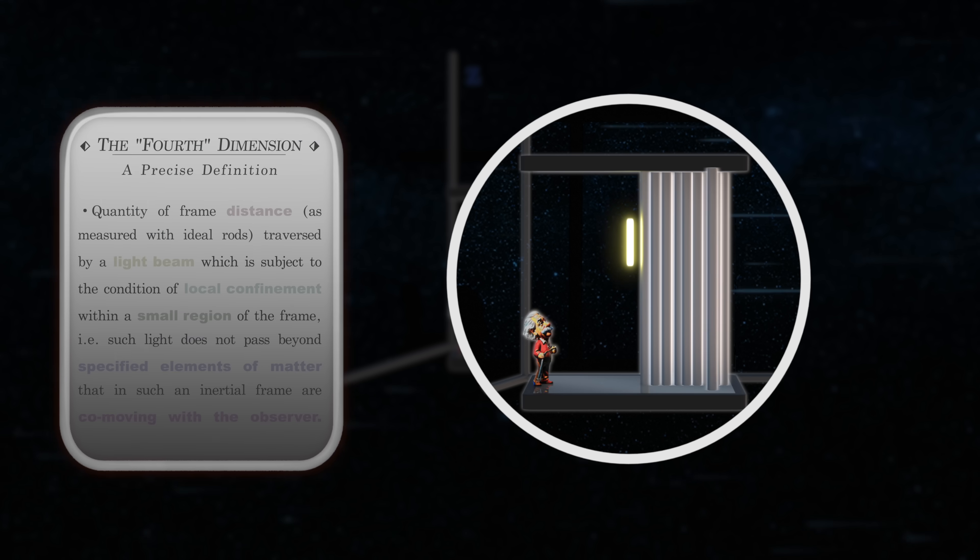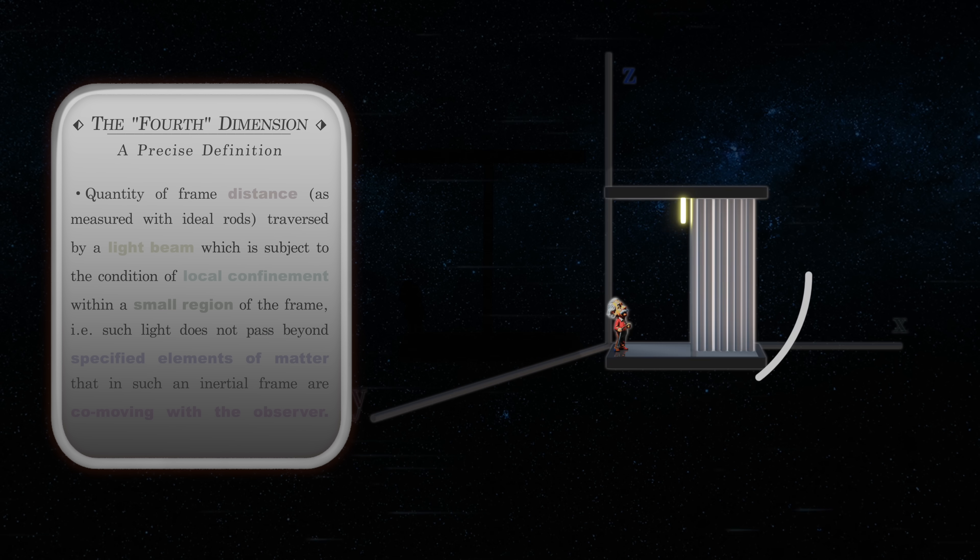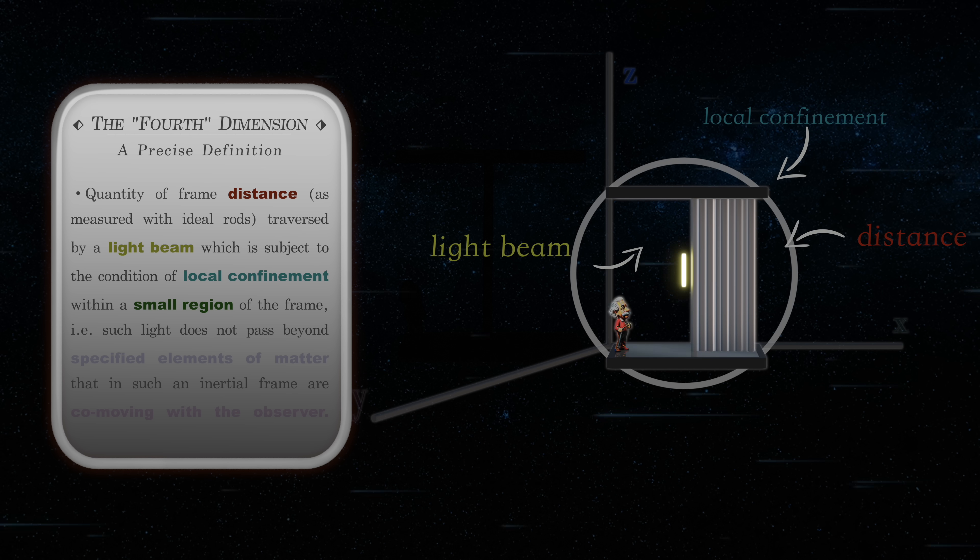Rather, we should most precisely say that this dimension is the amount of distance traversed by a light beam locally confined to some small region between specified elements of matter that are co-moving with an observer.